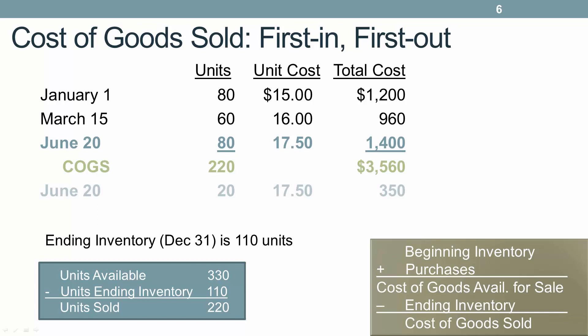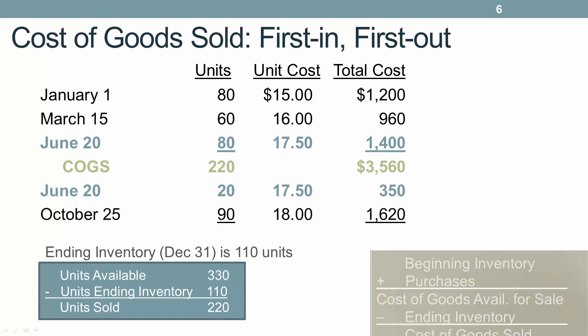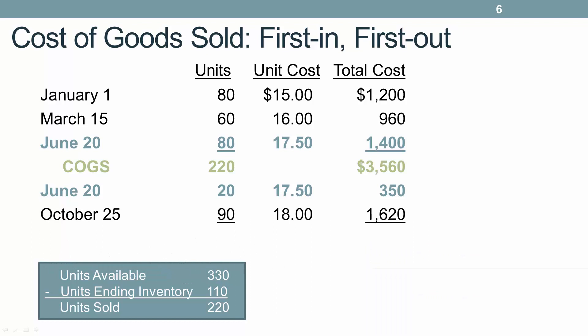The remaining units purchased in June and all of our October purchase are then included in our ending inventory, giving ending inventory a balance of $1,970.